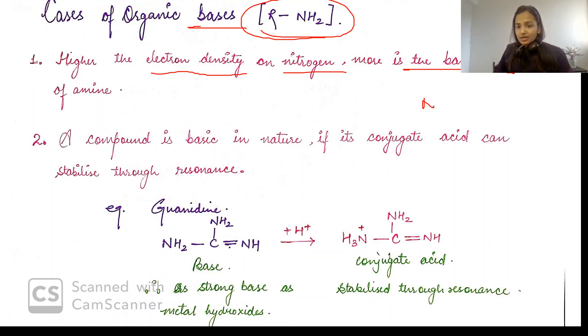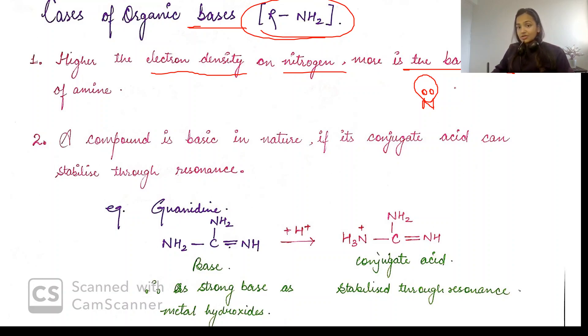A compound is basic in nature if its conjugate acid can be stabilized through resonance. Bases are proton acceptors. So the base will accept a proton to become the conjugate acid. If our conjugate acid is stable, the compound will be more basic. Means if the base accepts a proton and forms a strong bond with that proton, the conjugate acid must be more stable.